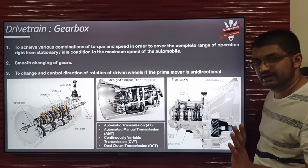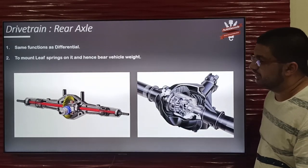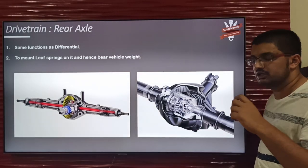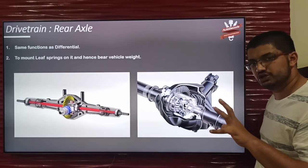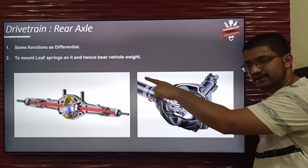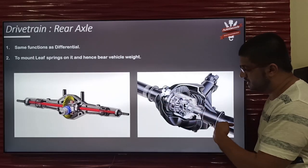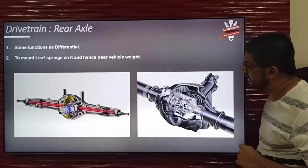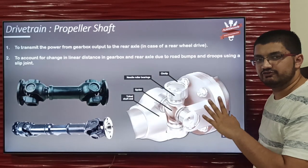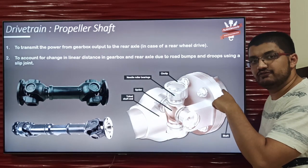So let's move on to the rear axle. If your engine is placed in the front of the vehicle and your driven wheels are the rear wheels, you have the straight inline transmission attached to your prime mover, and then a rear axle having the differential mechanism in it. The rear axle is the differential incorporated in a housing with two solid shafts driving the wheels. The propeller shaft connects the inline transmission to the rear driven axle which has the differential.